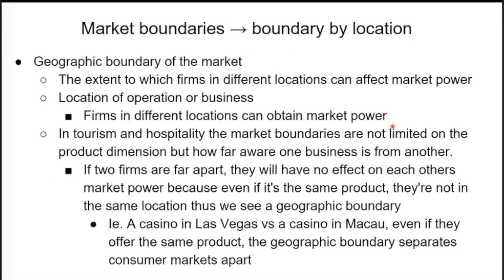For boundary by location, the geographic boundary of the market matters. Firms in different locations can obtain market power even with the exact same product. In tourism and hospitality, market boundaries are defined not just by product but by how far one business is from another — if two firms are far apart, they have no effect on each other. For example, a casino in Las Vegas does not interfere with a casino in Macau — they're completely different places offering gambling and entertainment, and their market power stays separate.